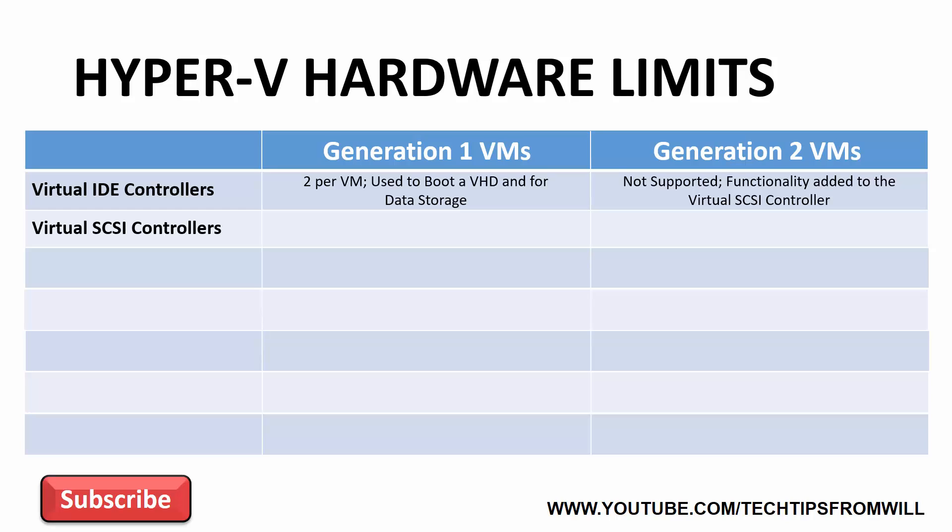Unlike IDE controllers, virtual SCSI controllers are supported in both Generation 1 and Generation 2 virtual machines. Both generations support up to four SCSI controllers per virtual machine. What's more, SCSI controllers can be added to and removed from virtual machines as required. Generation 2 virtual machines require a SCSI controller for boot functionality and data storage, whereas Generation 1 virtual machines can only use them for data storage.